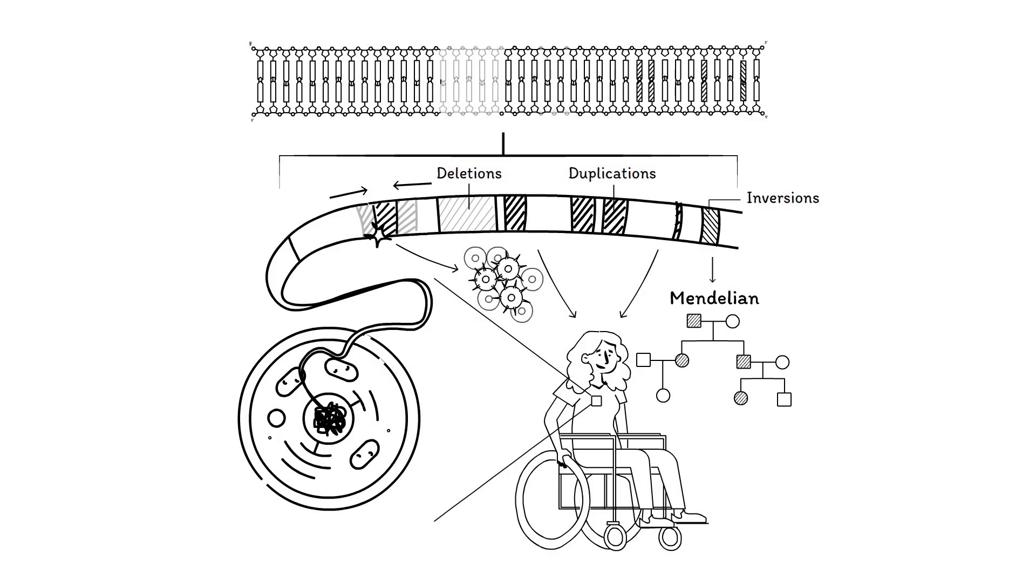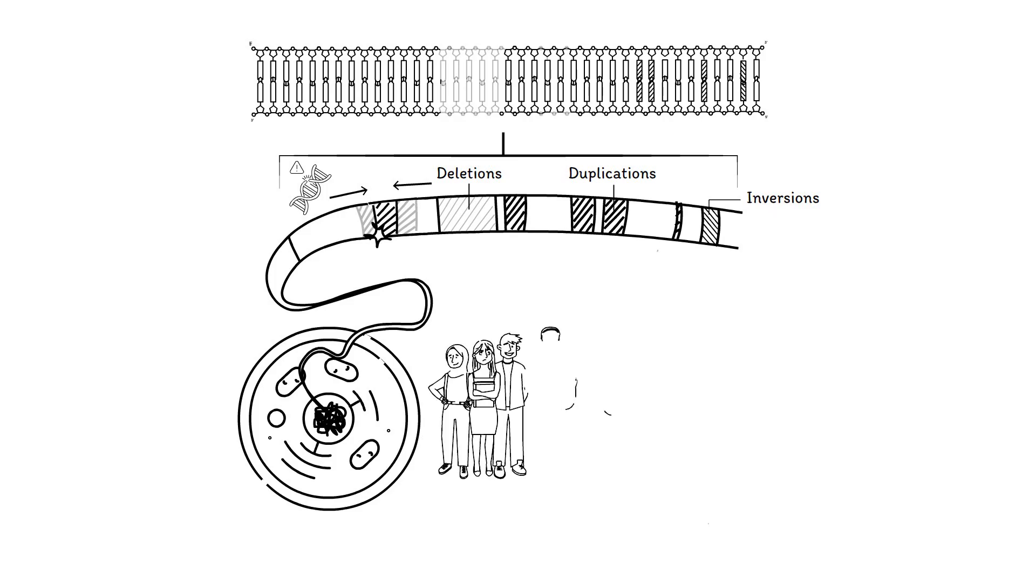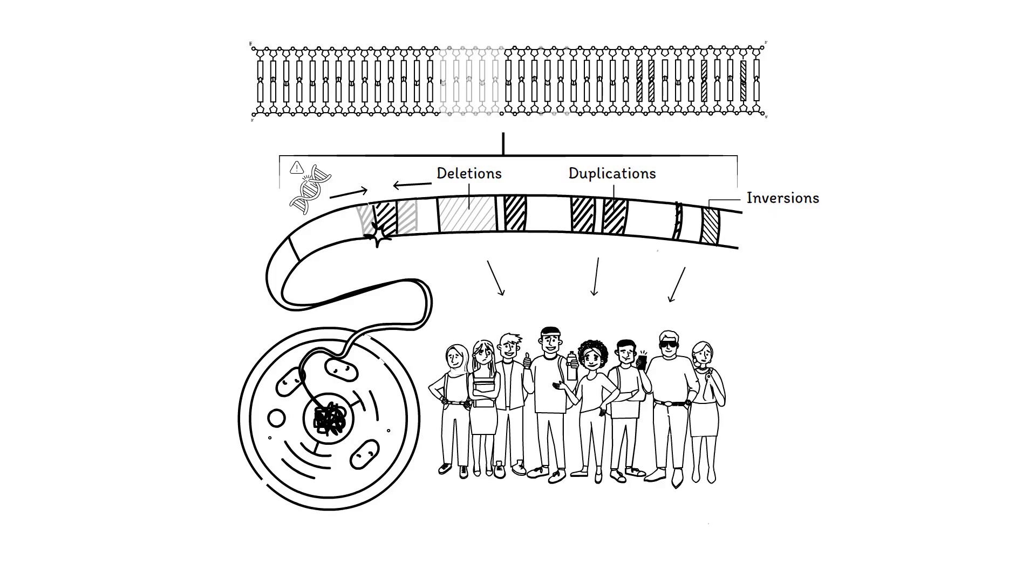To end on a positive note, most structural variations do not affect crucial regions of the genome and do not cause disease. In fact, our genome is riddled with CNVs and other structural variations, just like common genetic variants. They contribute to the variety in human individuals and help making each of us unique.